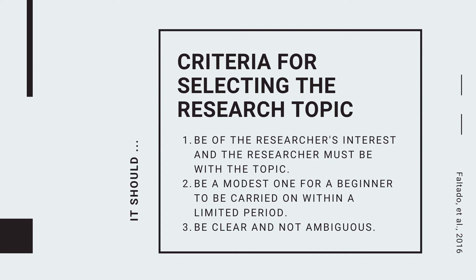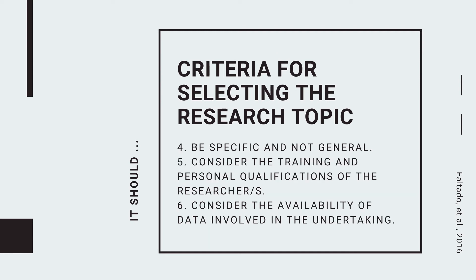Number three, it should be clear and not ambiguous. Even from the title, it should be clear what you want to study and what the limitations of the study are. Number four, it should be specific and not general. When choosing variables, be specific right away. For example, if you want to study intelligence, specify what kind of intelligence, since there are many types. Number five, it should consider the training and personal qualifications of the researcher. As of now you are still beginners, but still try to come up with a quality paper.